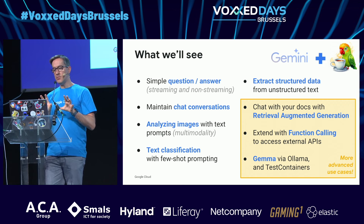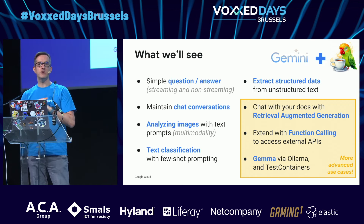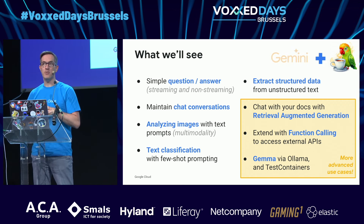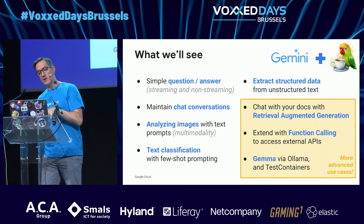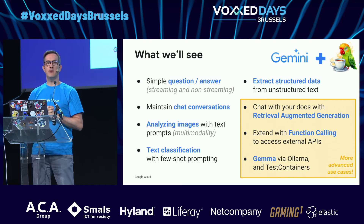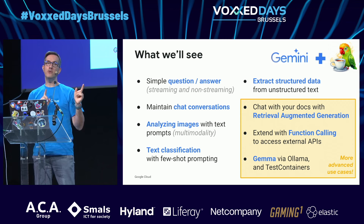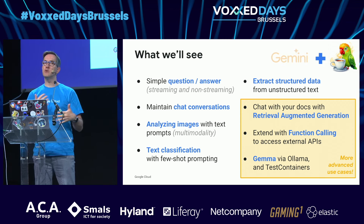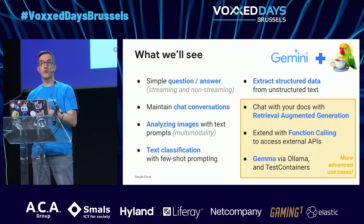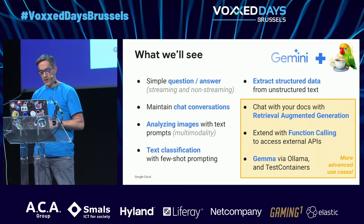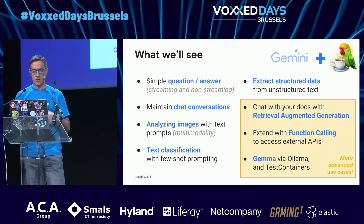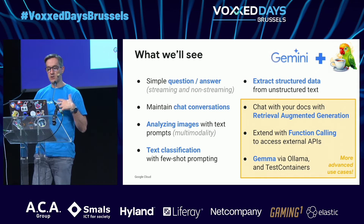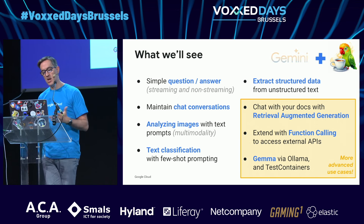The code examples I'm going to show are part of a workshop I run elsewhere. I'll share the code so you can go through the workshop yourself. I'm going to show basic stuff: question answering, doing chats, analyzing pictures, and then more advanced use cases like retrieval augmented generation, function calling, and a demo with Gemma running locally.